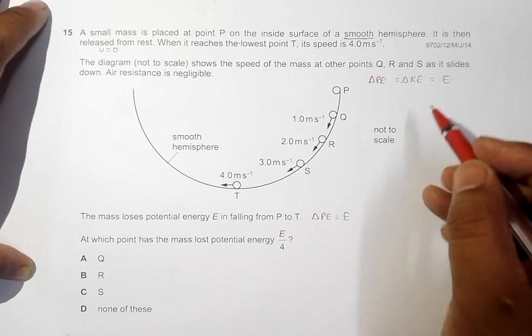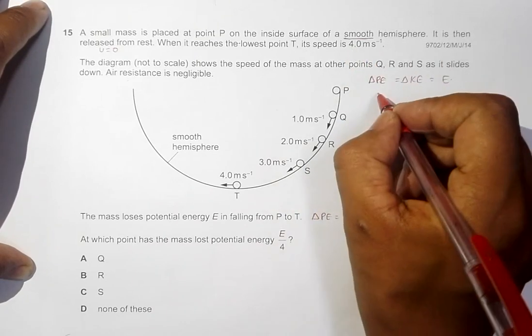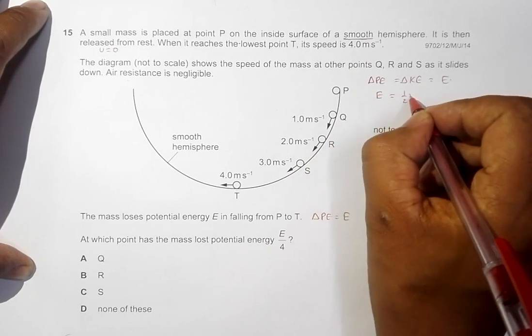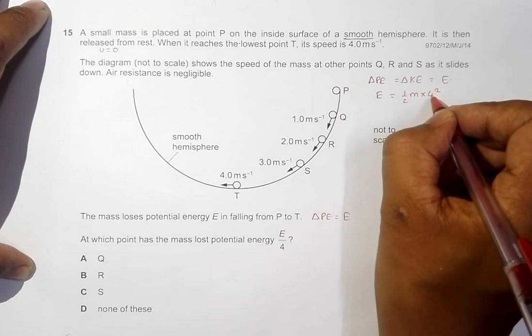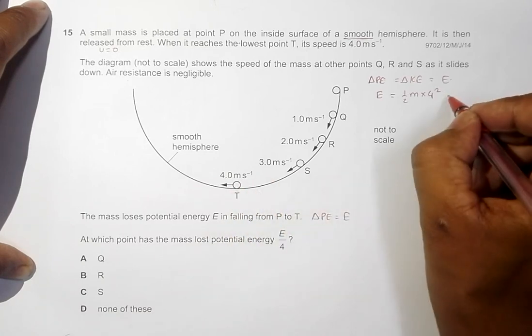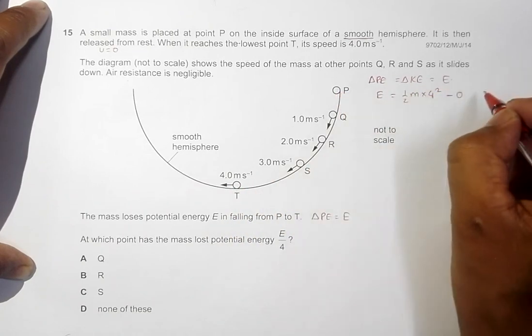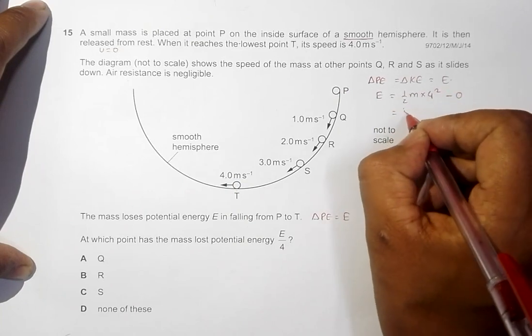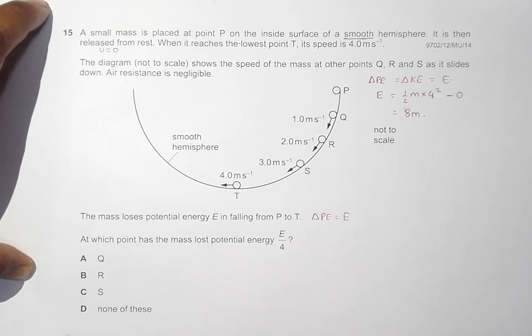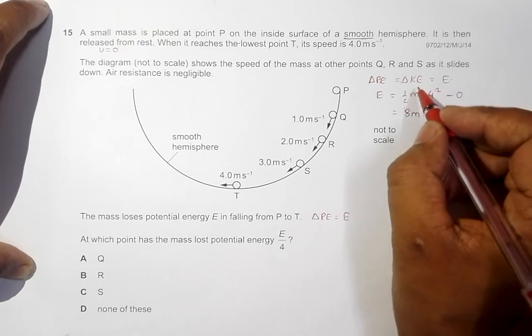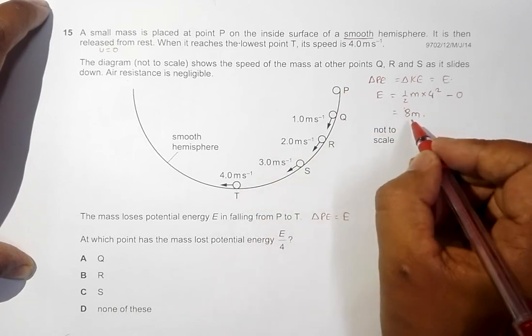The total change of KE will be equal to 1/2 M times 4 squared, which is the velocity here, minus 0, which is the KE in the beginning. So that's equal to 16/2, which is 8M. So the total loss of PE, or the total change of KE from here to here, is equal to 8M.